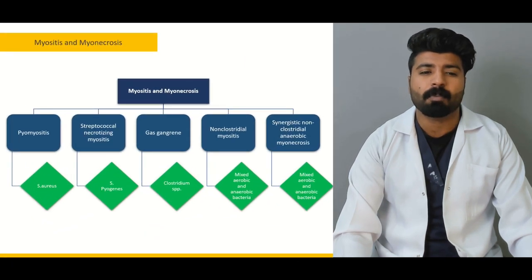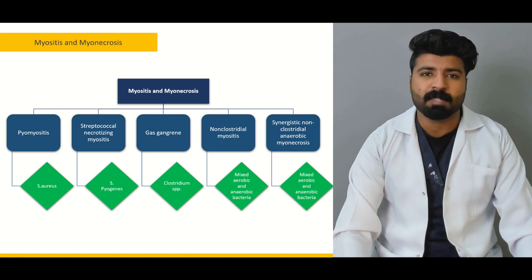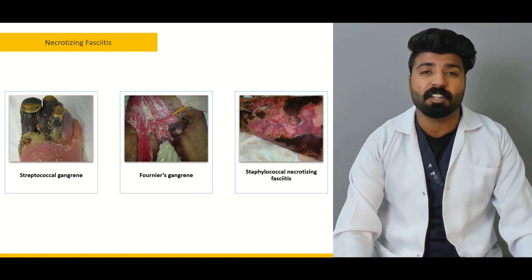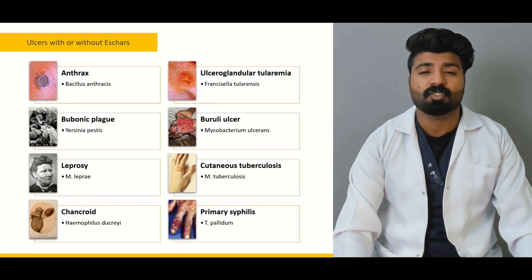Next, we're going to talk about myositis and myonecrosis, which means inflammation of the muscle and degradation of the muscle — what organisms cause this pathology and how it manifests. Then we're going to talk about necrotizing fasciitis, which is a rather serious emergency — which organisms cause necrotizing fasciitis and how it manifests.